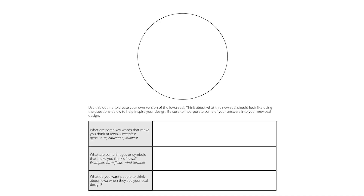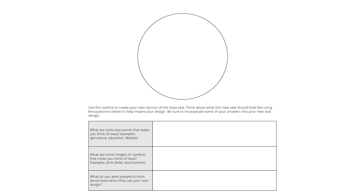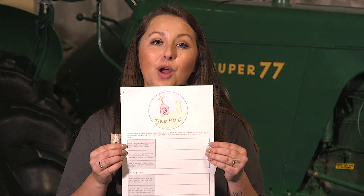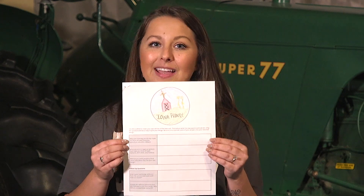Your final step is to create. Draw and color your own version of the Iowa seal using the provided drawing space. Be creative and make sure to represent Iowa in your design. Here's an example of what your finished product could look like.